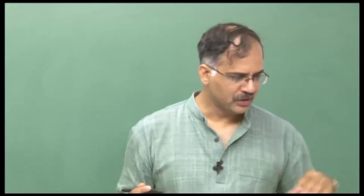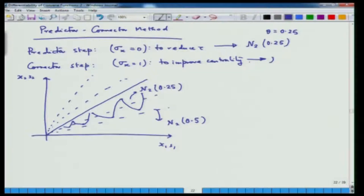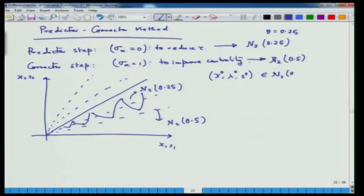What is a predictor-corrector step? I am telling it from this particular book. You start with two neighborhoods. The first neighborhood is linked to a particular choice of the centering parameter, and this is N₂(0.25), that is theta equal to 0.25. The next neighborhood, where sigma equals 1, is associated with the neighborhood 0.5, which is a slightly larger neighborhood. So I have two neighborhoods. I start from a point x⁰, λ⁰, s⁰ in the N₂(0.25) neighborhood.